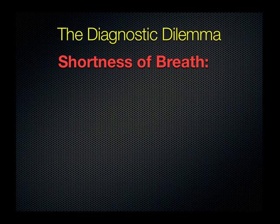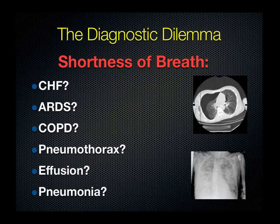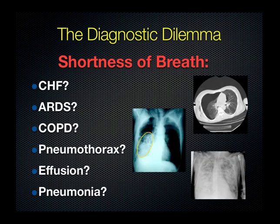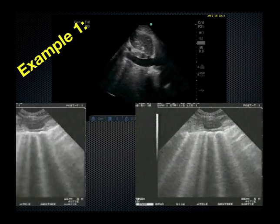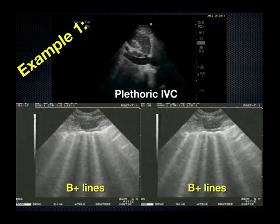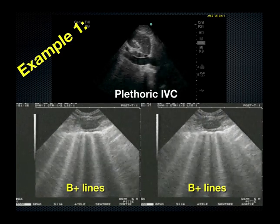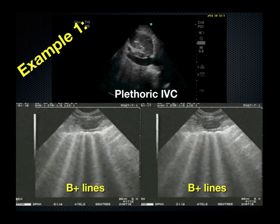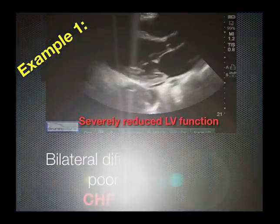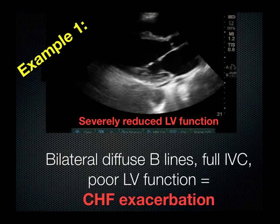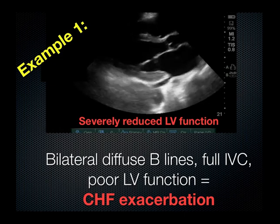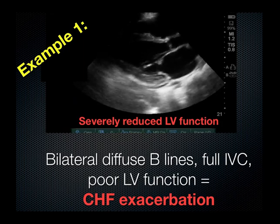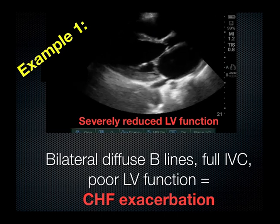Here's the diagnostic dilemma: shortness of breath — CHF, ARDS, COPD, or something else? In order to get a jump start on appropriate therapy, use your ultrasound. Example one: patient is acutely short of breath, you find an IVC that is plethoric with no significant respiratory variation, bilateral B lines, and with the cardiac window you can appreciate that the left ventricular function is severely reduced. The combination of bilateral diffuse B lines, a full inferior vena cava, and poor LV function leads you to the diagnosis of a CHF exacerbation as the cause of that patient's respiratory distress.